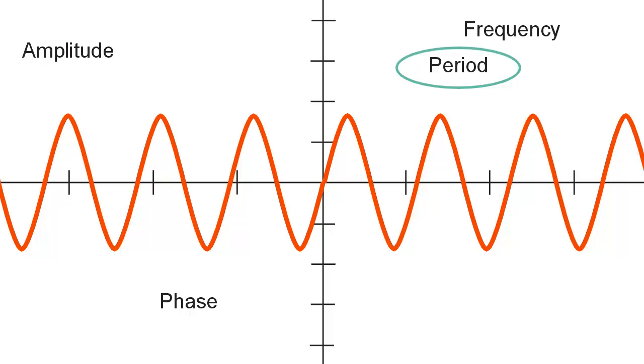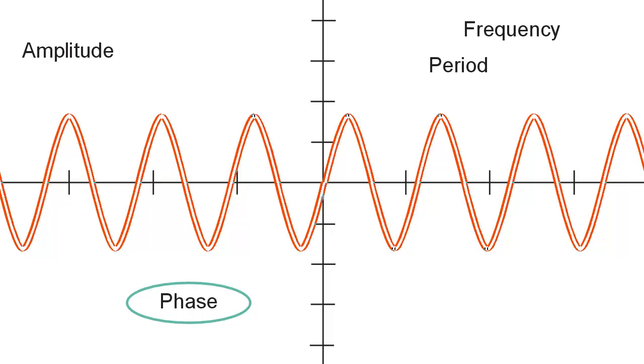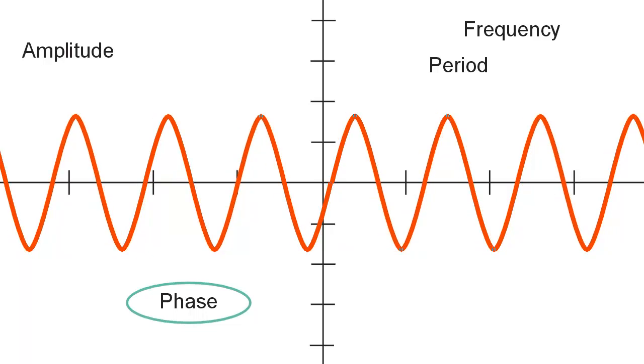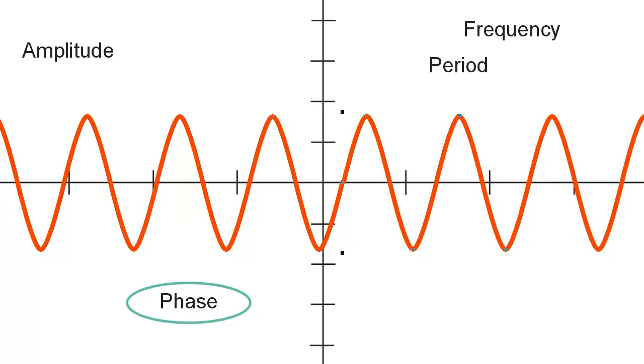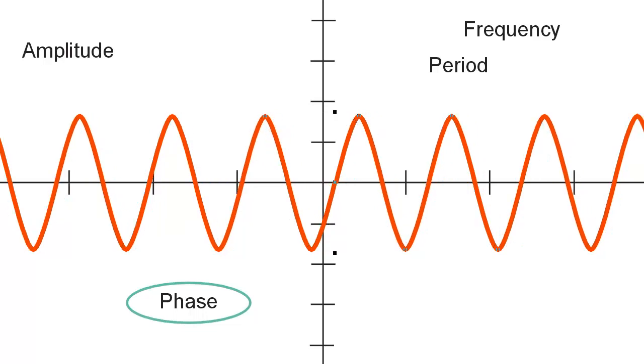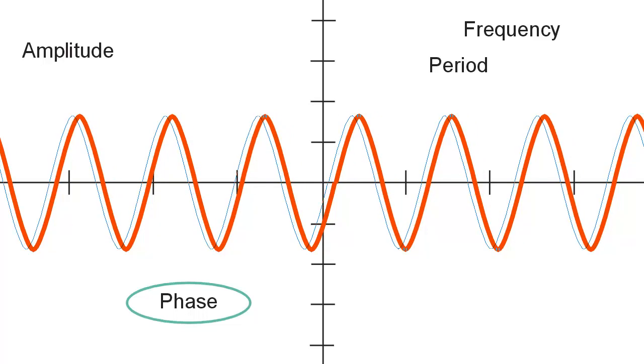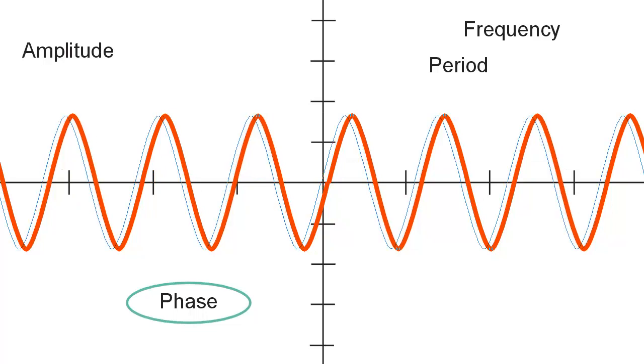And think about what happens when we vary the phase of a wave. Well, in that case, the frequency and the amplitude stay the same, or let's just assume that they do. What happens to the wave? It moves either to the right or to the left along the time axis like that.